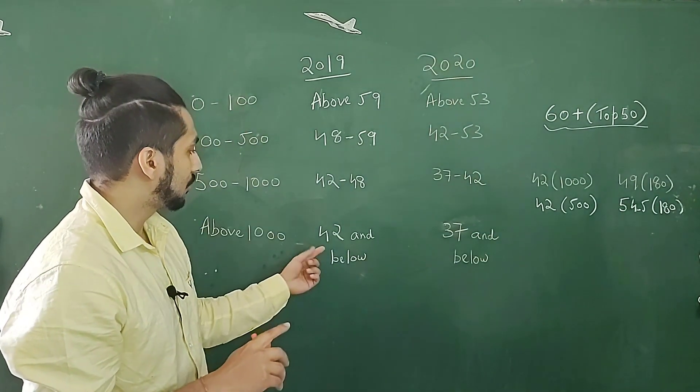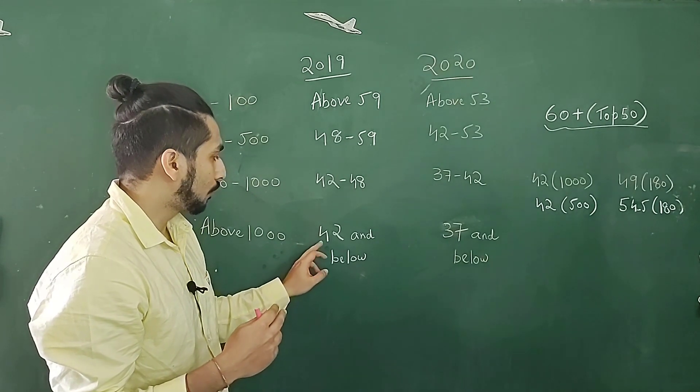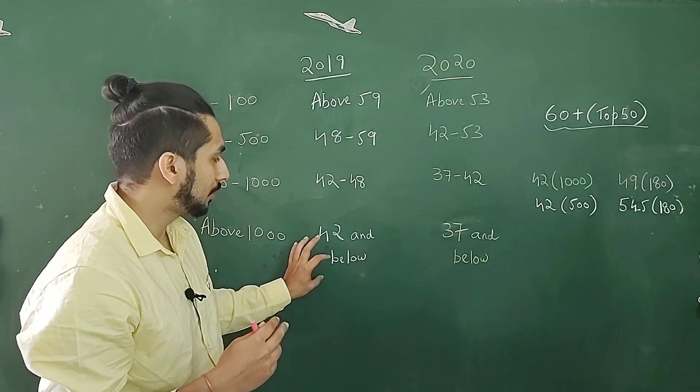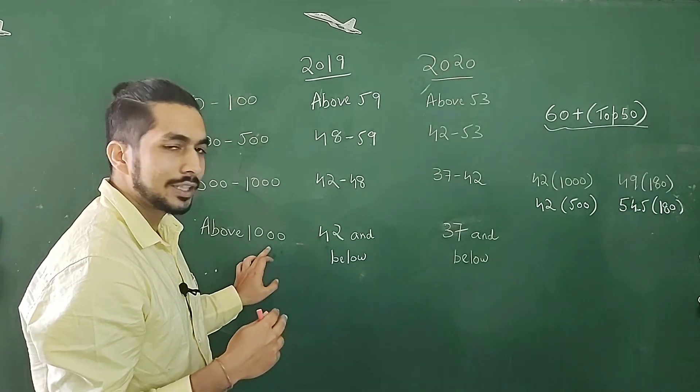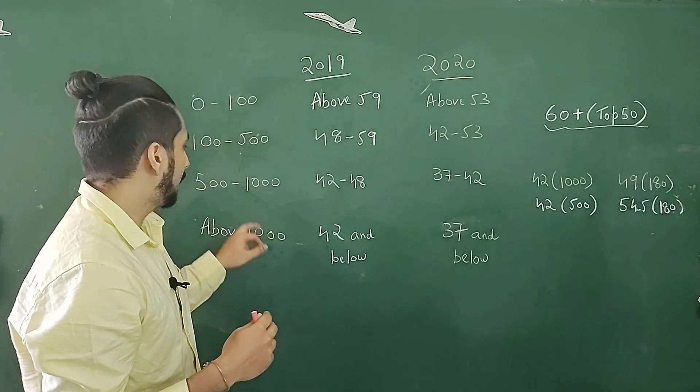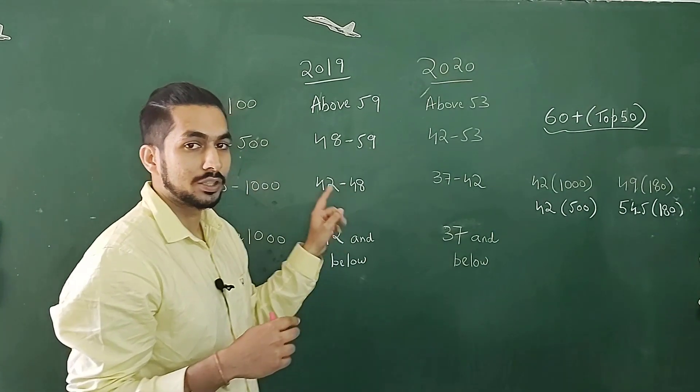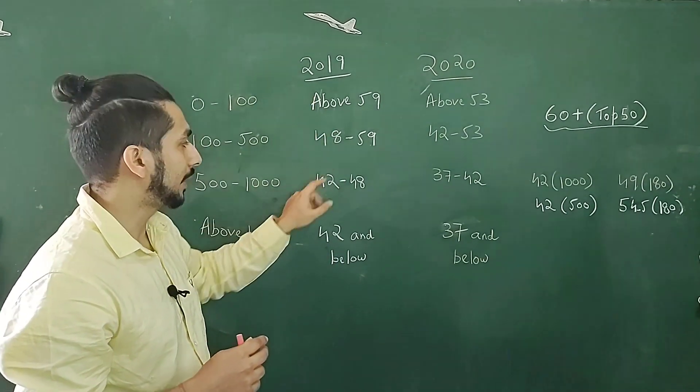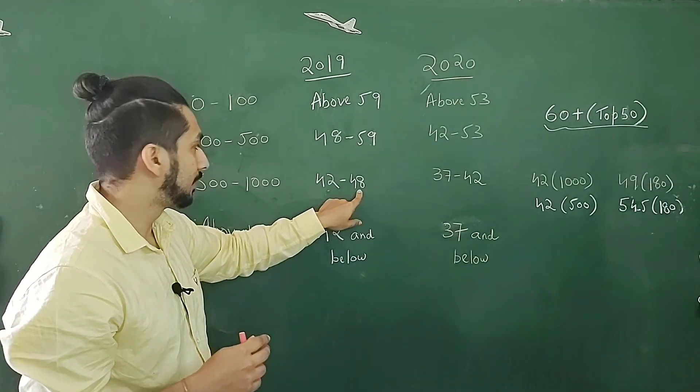So if you look at the 2019 examination, if you are scoring 42 marks or below, that is between, I think the cutoff was 32. So if you are scoring between 32 to 42, you will get a rank, like at 42, you get a rank of 1000. Then if you want a rank between 500 to 1000, in 2019, this was the year with the highest cutoff, you would require a score between 42 to 48 marks.